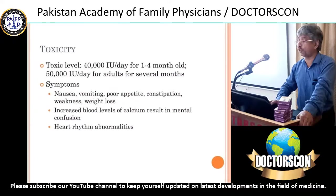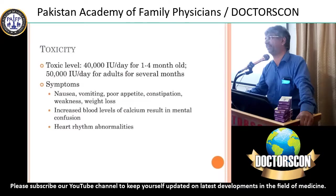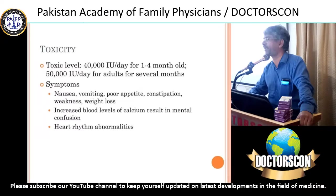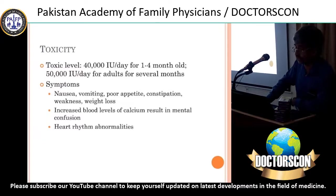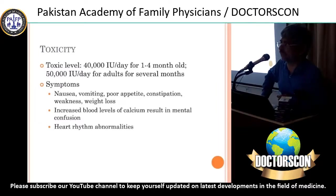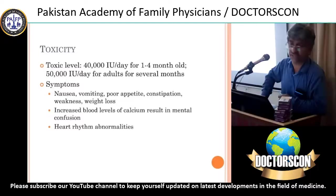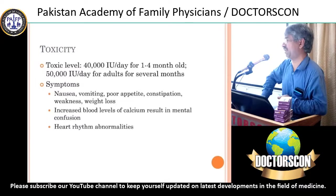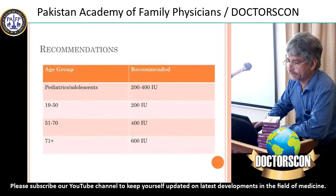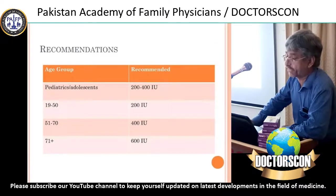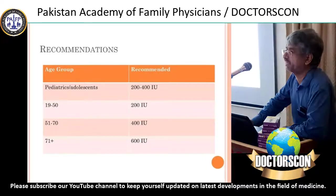Hypervitaminosis D can also be present if a person is taking very high doses — 40,000 IU per day for one to four months, or 50,000 IU per day for adults for several months. If a patient is deficient, 50,000 IU every 15 days would suffice. Follow-up tests are very important. The recommendation for adults is 400 IU per day.